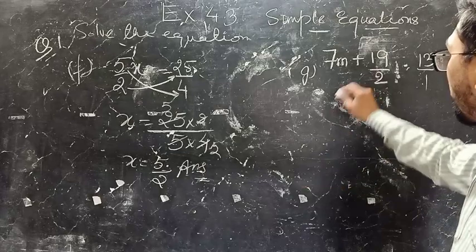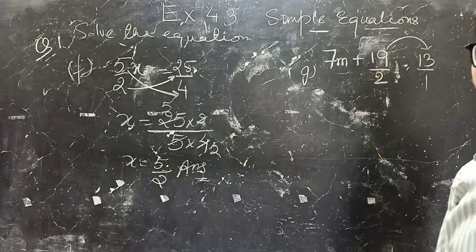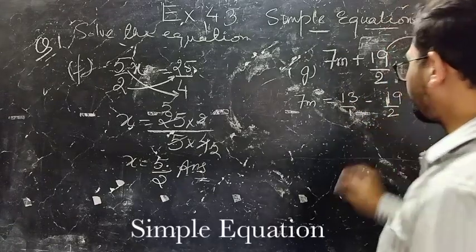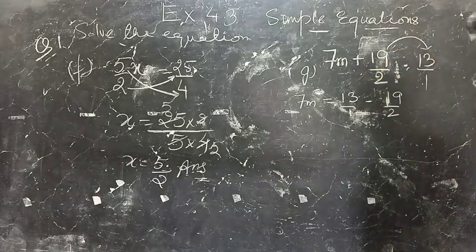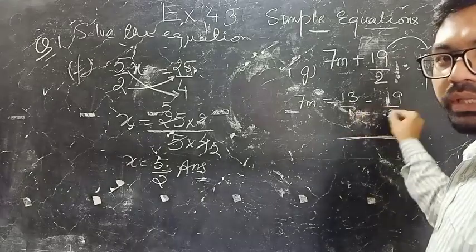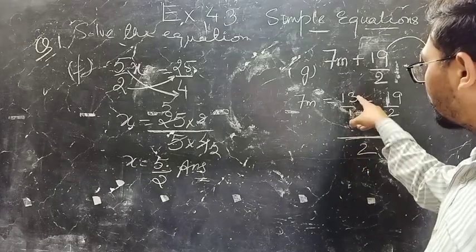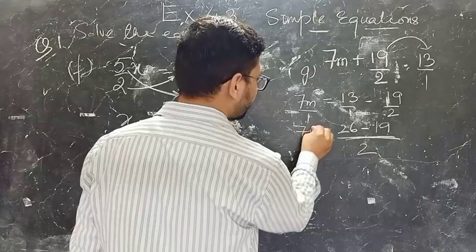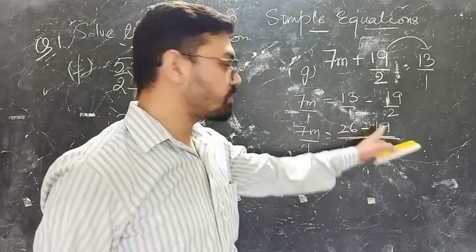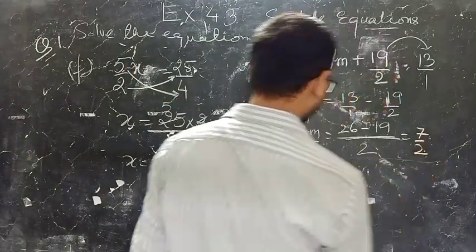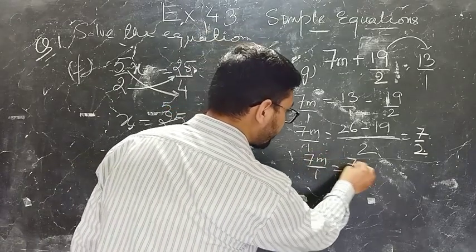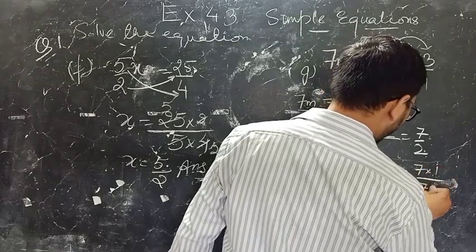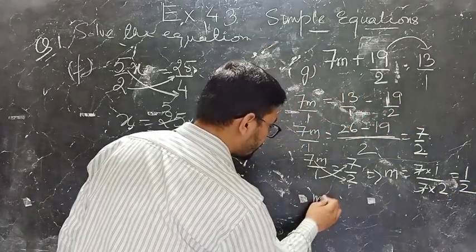Part G: 7M plus 19 by 2 equals 13. First take 19 by 2 to the RHS. So 7M equals 13 minus 19 divided by 2. Take LCM of 1 and 2, which is 2. So 2 into 13 is 26, and 1 into 19 is 19. So 7M divided by 1 equals 26 minus 19 equals 7, which is 7 by 2. Then M equals 7 into 1 divided by 7 into 2. The value of M is 1 upon 2.